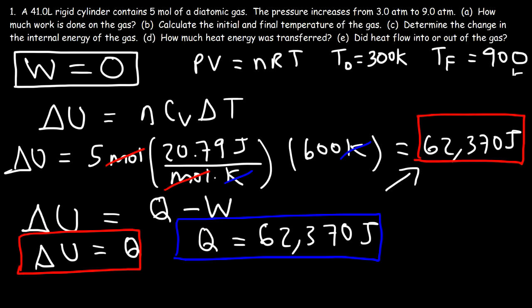Part E: did heat flow into or out of the gas? Because Q is positive and the temperature increased, heat energy had to flow into the system. If the temperature were to decrease, that would mean heat energy was flowing out of the system. Since the temperature went up, heat energy flowed into the system.